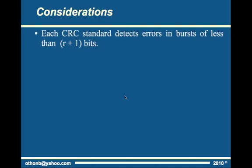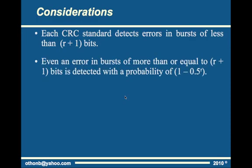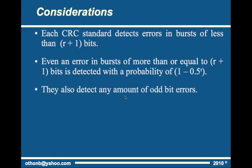There is some probability involved in the CRC calculation process. A burst error with less than R+1 bits is guaranteed to be detected by CRC codes, where R is the generator's degree. Burst errors with more than or equal to R+1 bits are detected with probability 1 minus 0.5 to the power R. Odd bit errors are always detected.